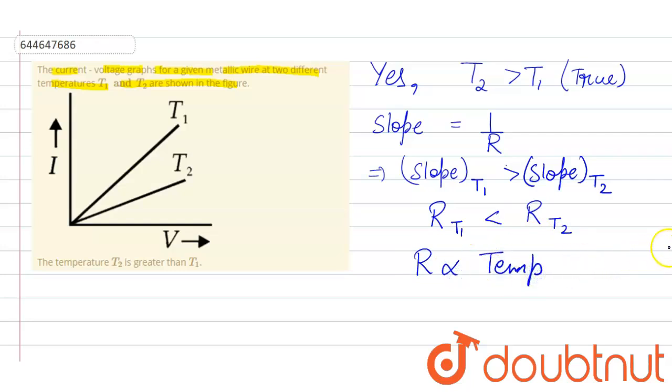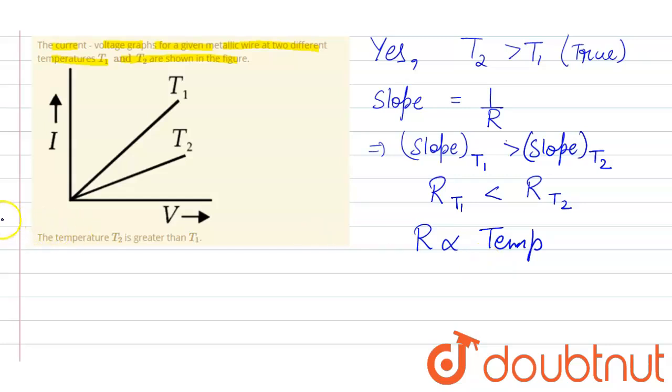So that means if we combine these two equations, that is equation one and equation two, we find out that temperature T2 is greater than temperature T1. So this statement is correct. I hope that answers your question. Thank you.